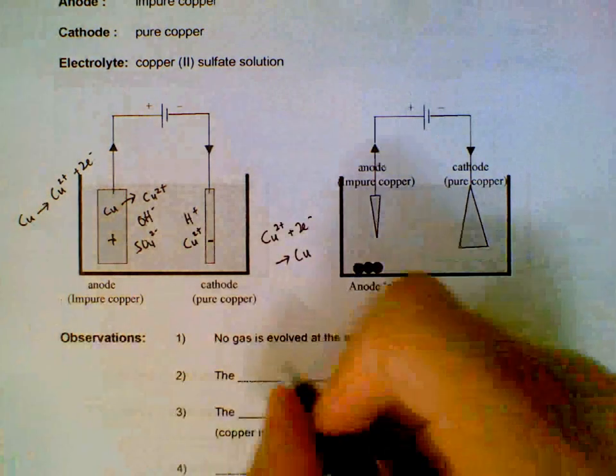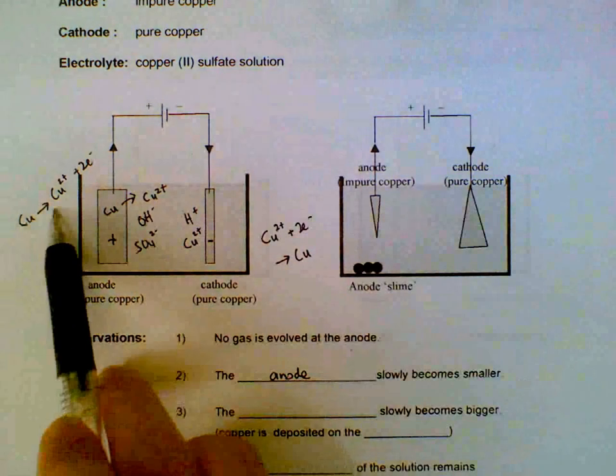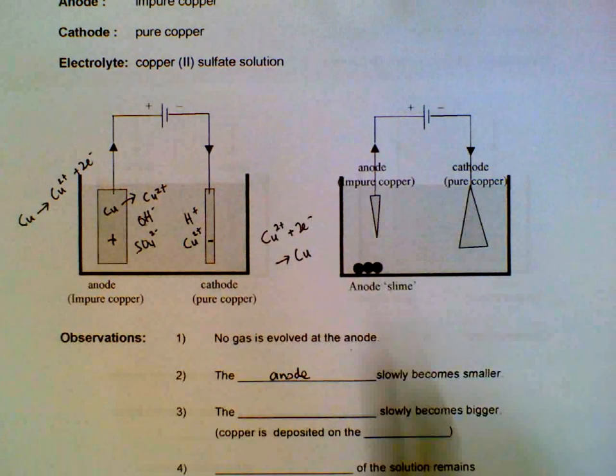The anode will slowly become smaller as the copper metal becomes copper ions.